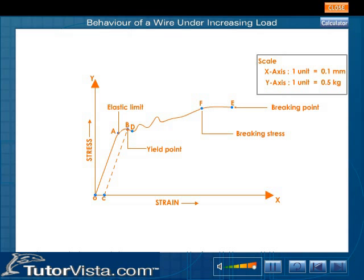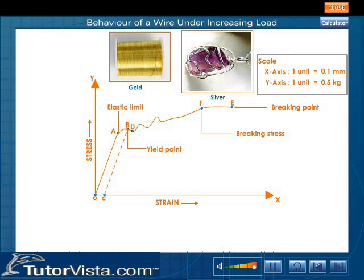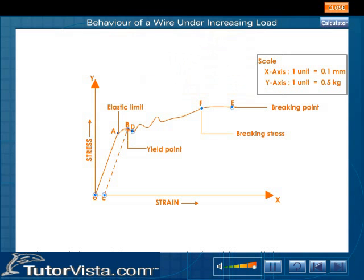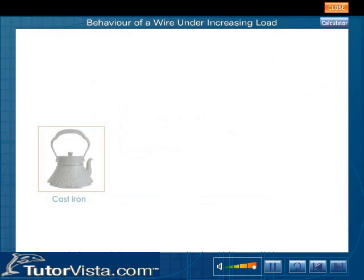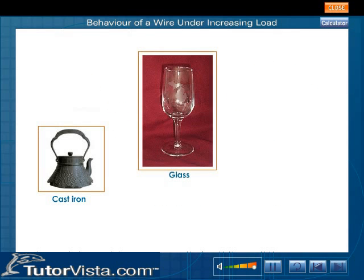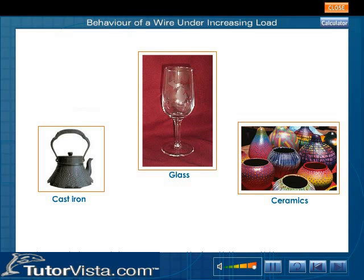If the material of the wire is ductile, the portion DE of the curve will be fairly large. Ductile materials can be drawn into wires, and most metals are ductile. But if the portion DE is relatively small, the wire will break even for small elongation — such materials are called brittle. Cast iron, glass, and ceramics are examples of brittle substances.